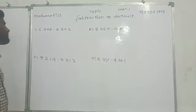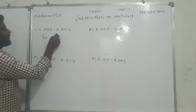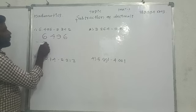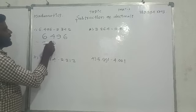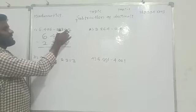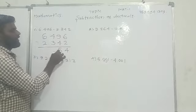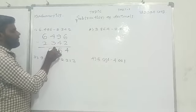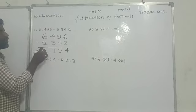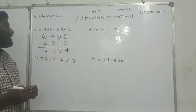First question is 6.496 minus 2.342. Alright. 6 minus 2 is 4. 9 minus 4 is 5. 4 minus 3 is 1, decimal point as this. 6 minus 2 is 4. Answer is, dear students, 4.154.